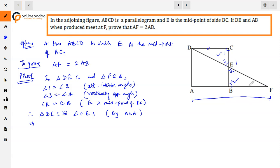DC is equal to BF by CPCT. But DC is equal to AB because ABCD is a parallelogram. Therefore, BF is equal to AB.